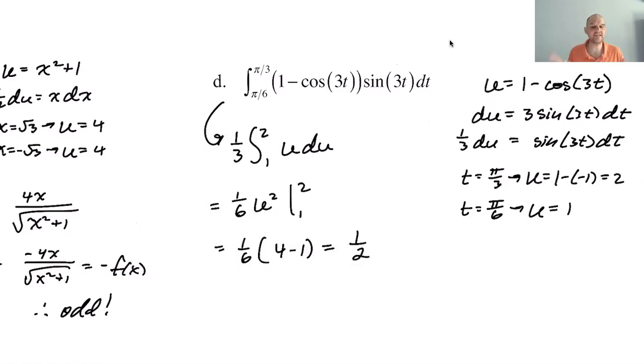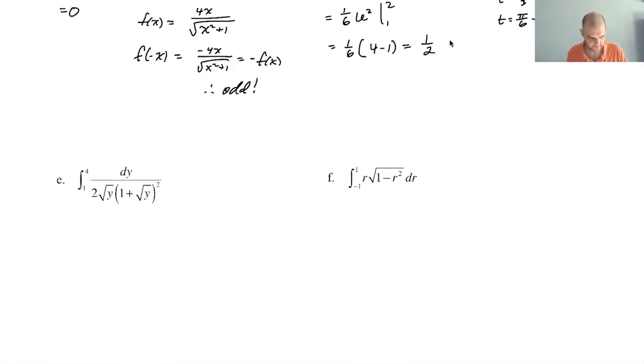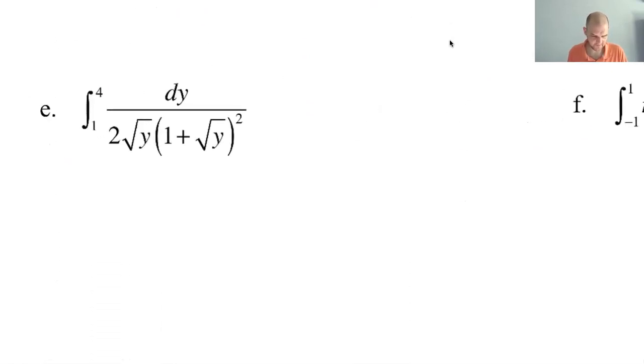It seems too easy. 1 sixth, 4 minus 1 is 3. I get 1 half. Isn't that weird? My inclination, instead of the u-substitution, is to distribute, and then do two separate integrals, and then add them together. It's way less efficient, but it's also what strikes me. So, I don't know. You can do what you want.